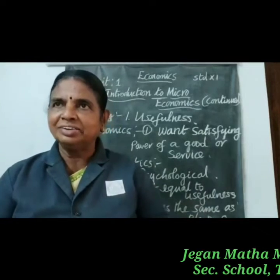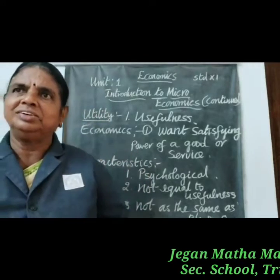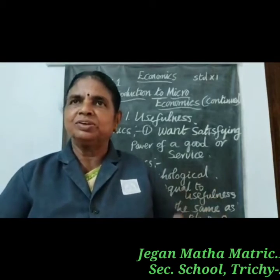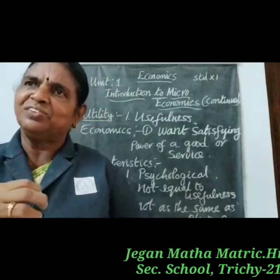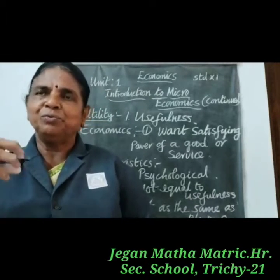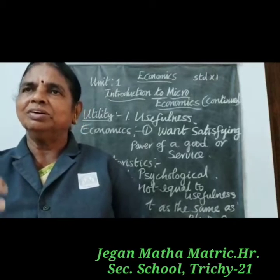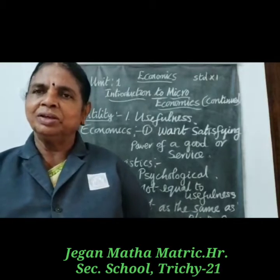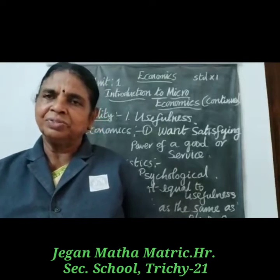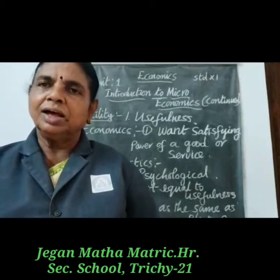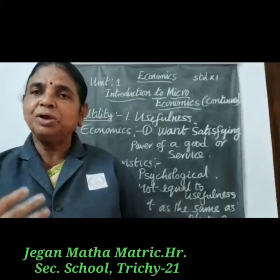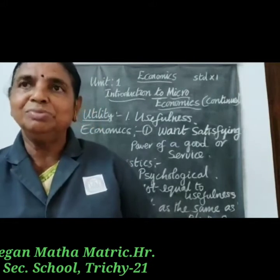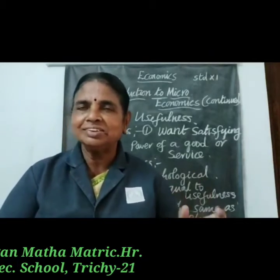Fourth, utility is personal and relative. An individual obtains varying utility from the same thing in different situations and different places. Fifth, utility is a function of the intensity of human want. An individual consumer faces a tendency of diminishing utility after repeated use. For example, a person coming out of hot sun drinks water and gets high utility from the first few glasses, but as he drinks more, the utility diminishes.